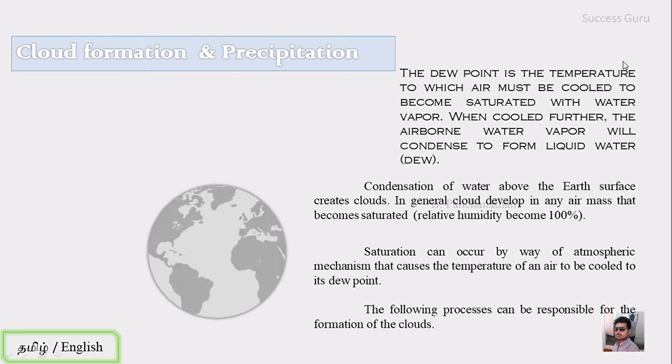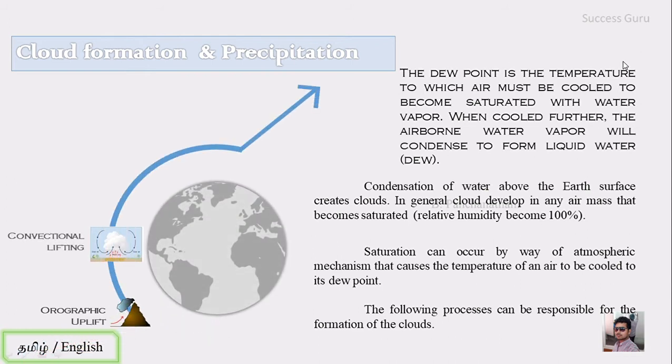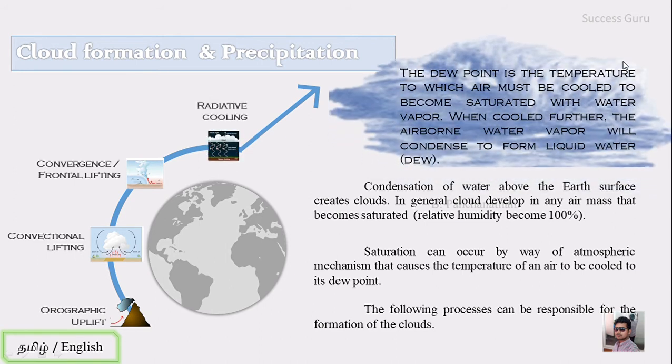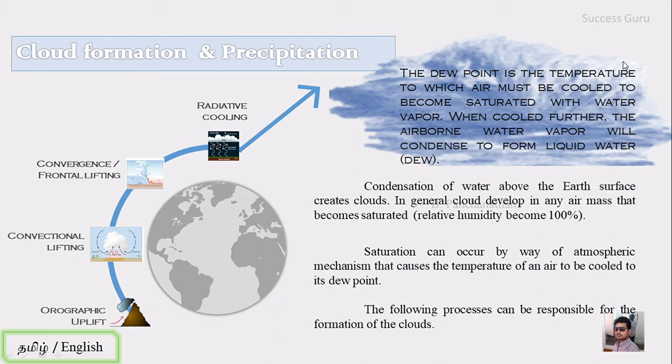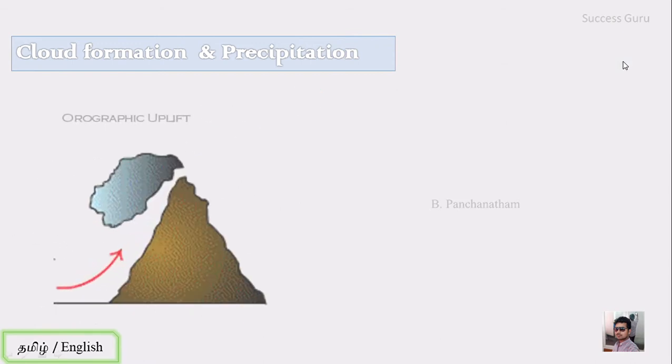The four main processes responsible for cloud formation and precipitation are: first, orographic uplift; second, convectional lifting; third, convergence or frontal lifting; and fourth, radiative cooling. Let us see one after the other.